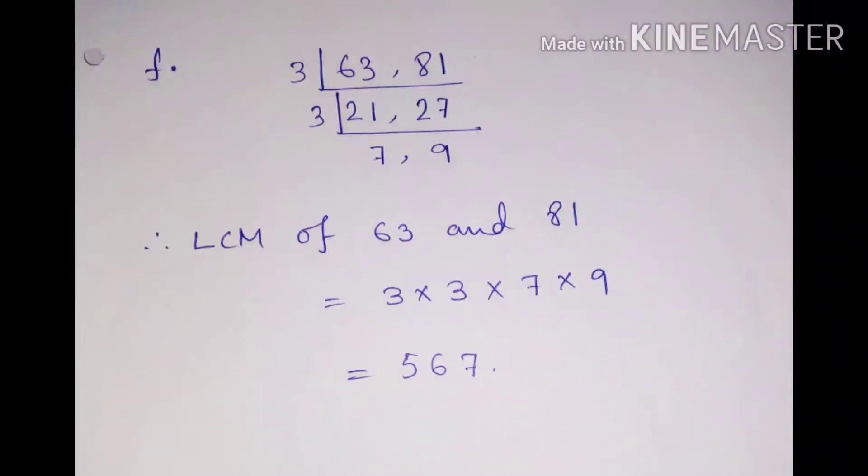And after repeated division we got the factors. And at the last we have multiplied the prime factors of 63 and 81, and we got the LCM 567.